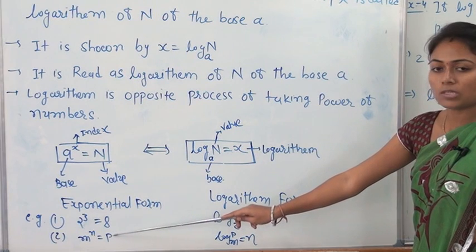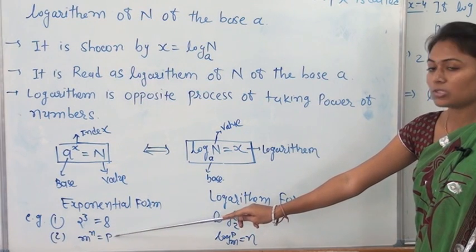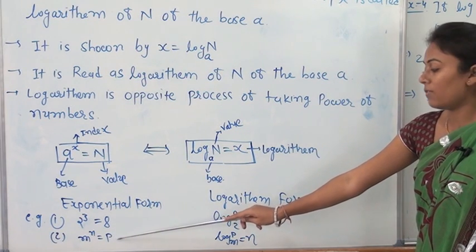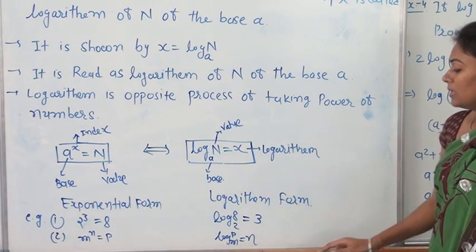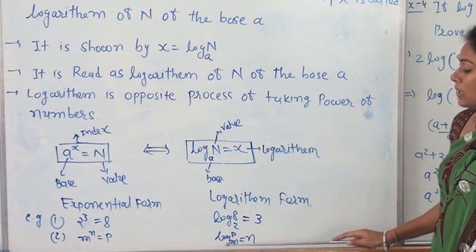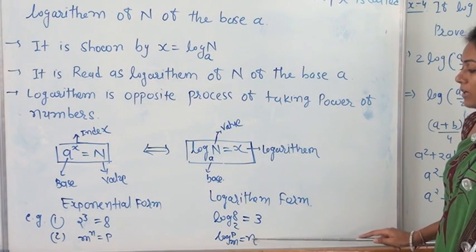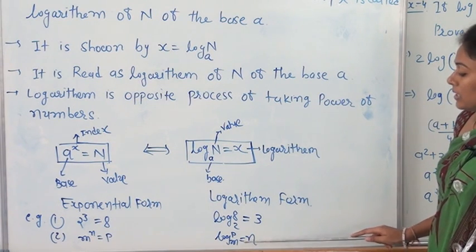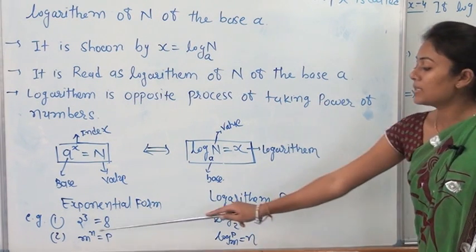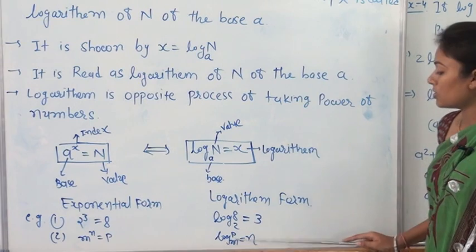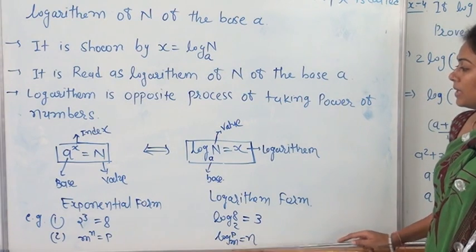Similarly, if we have the exponential form M raised to N equal to P, then we get log P base M equal to N. Here, the base is M in both forms. The index is N, the value is P, and the logarithm equals N.